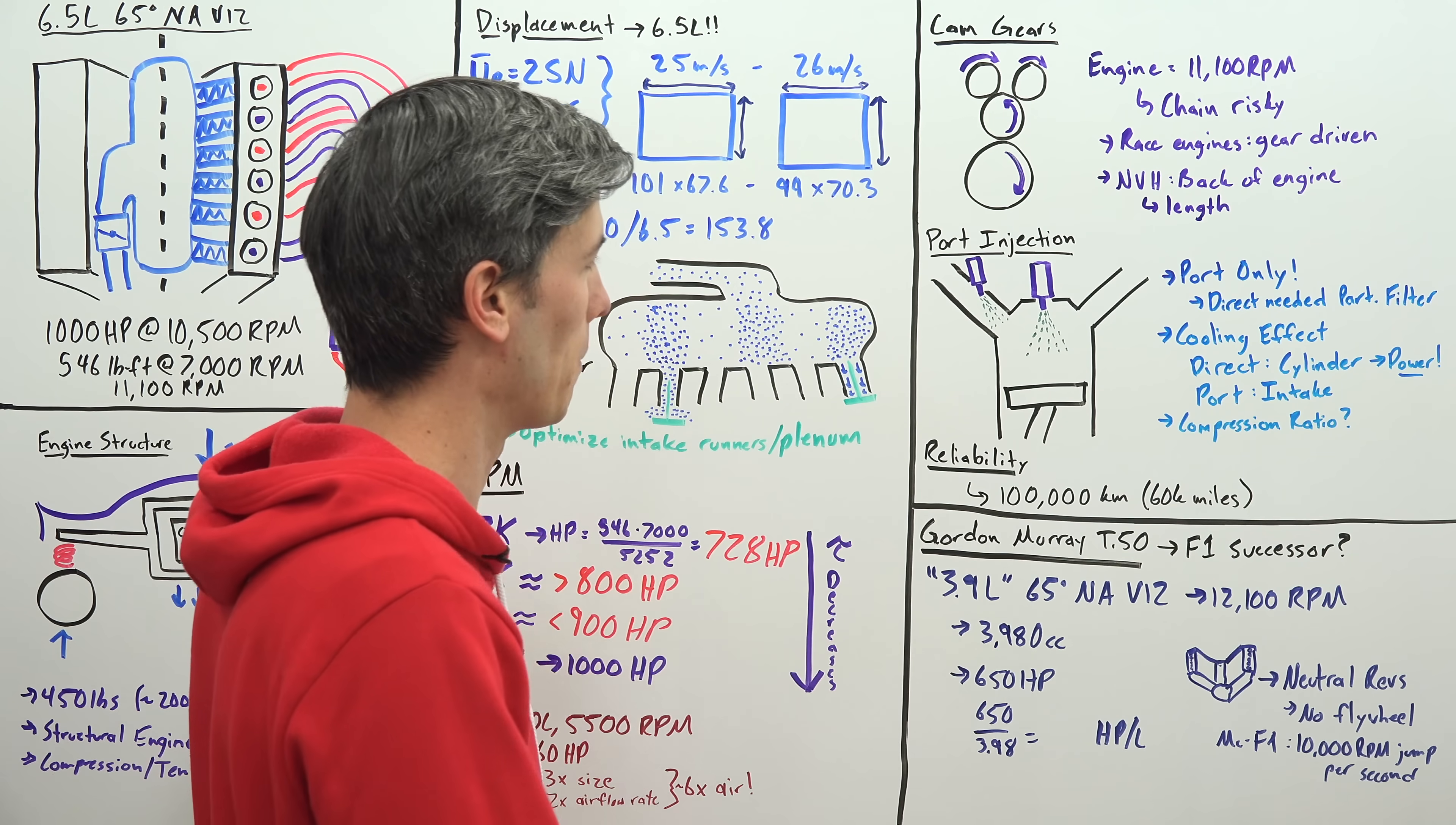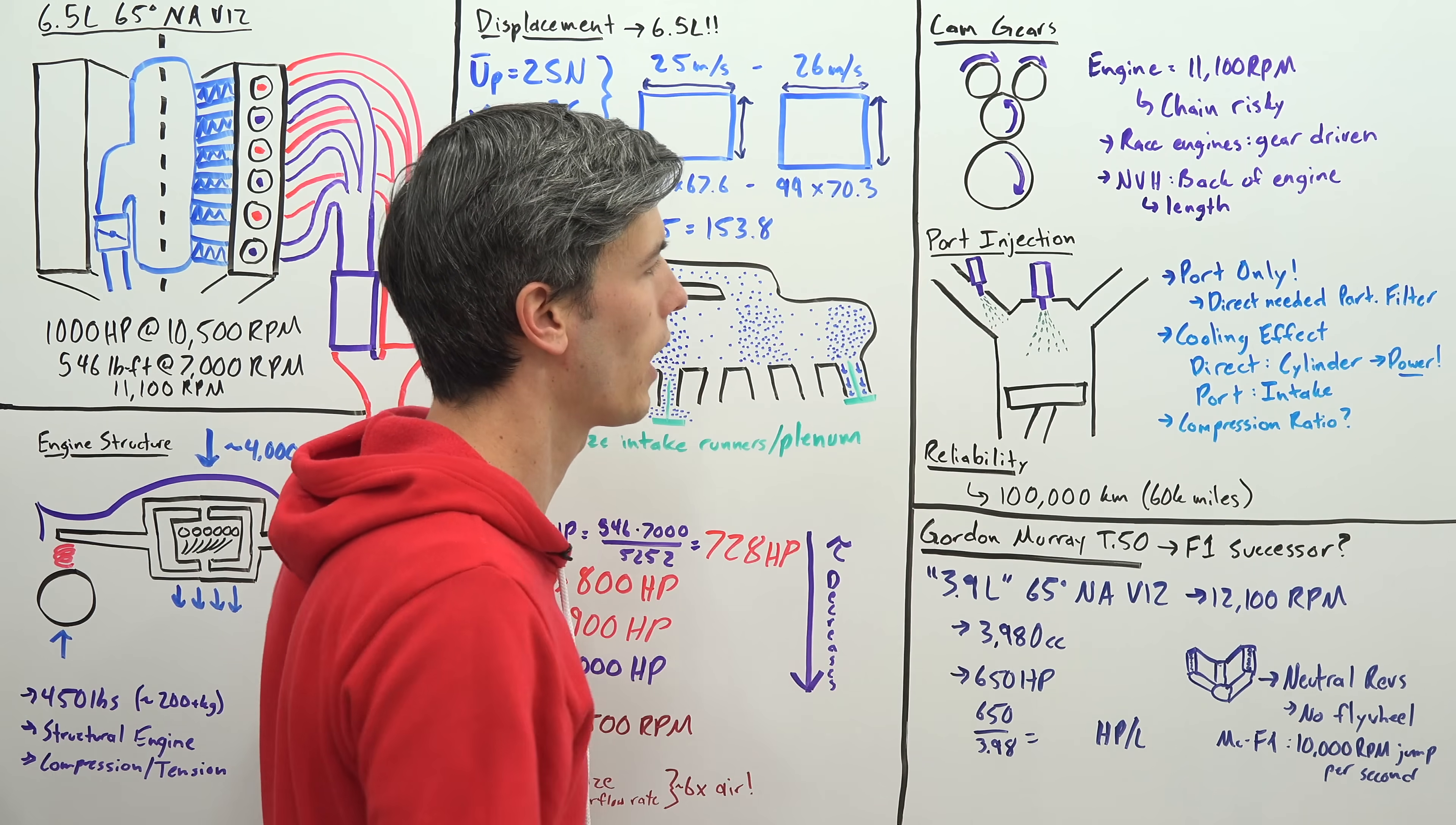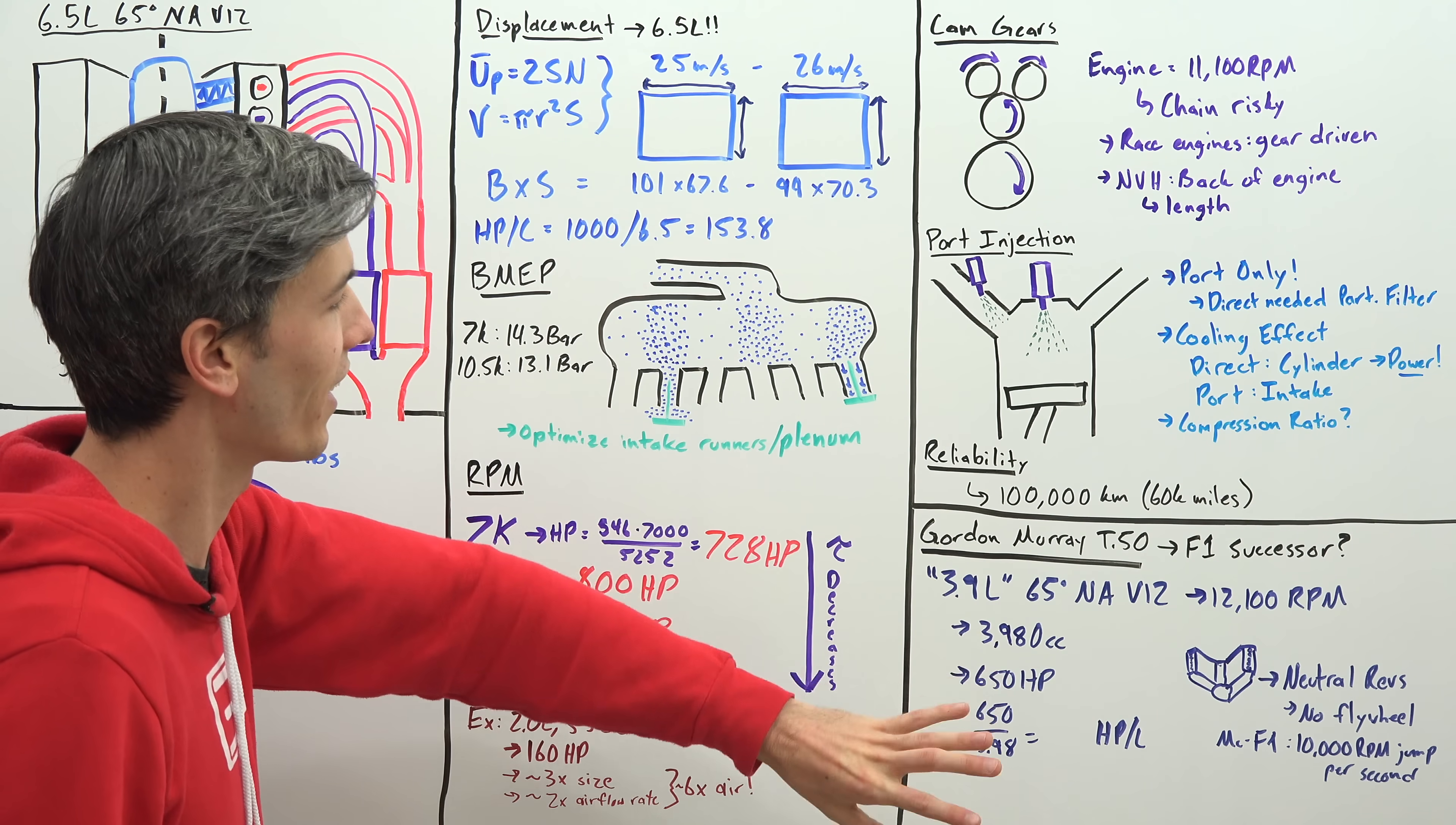So there are performance benefits to going just direct injection. However in this case they have gone with just port injection in order to make this thing meet emissions targets. So I am curious what the compression ratio is of the engine, they have not released this, so it will be interesting to see what it is. But I imagine it might be slightly lower than some of the top end engines out there simply because we know it's running port injection and because these brake mean effective pressures are within you know a reasonable range.